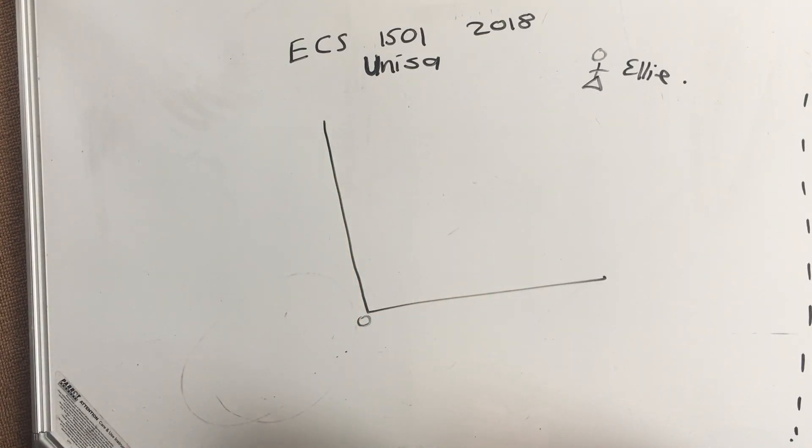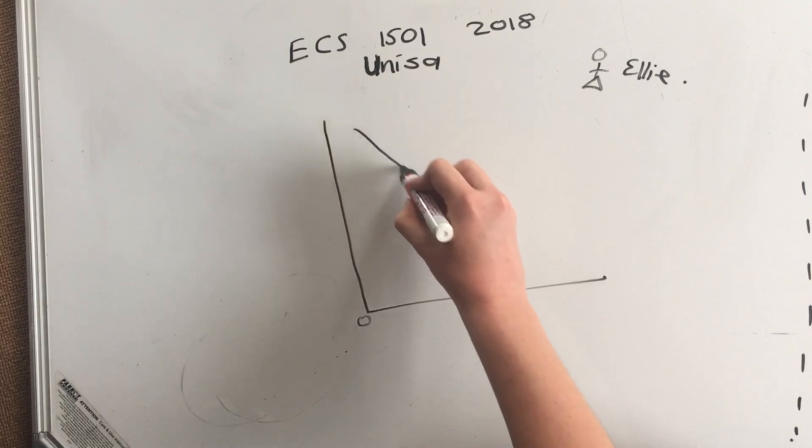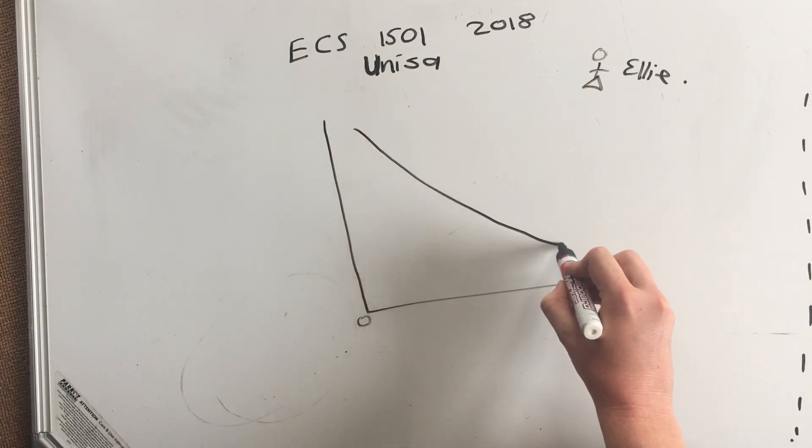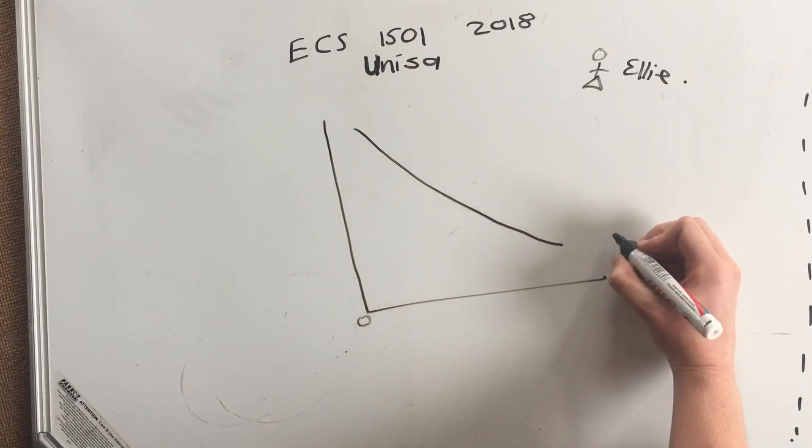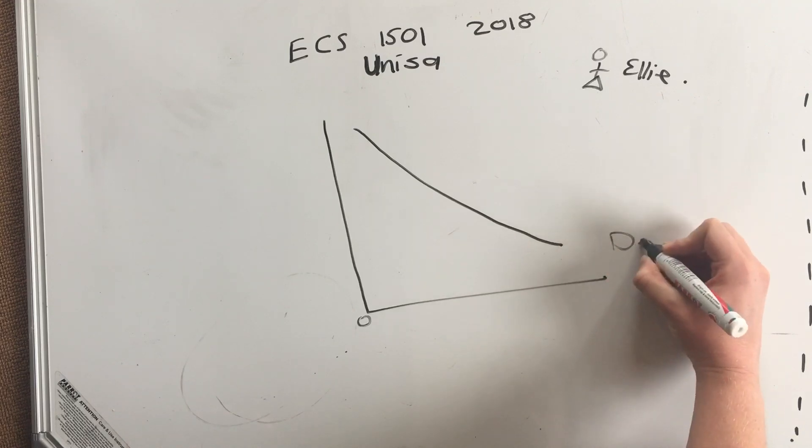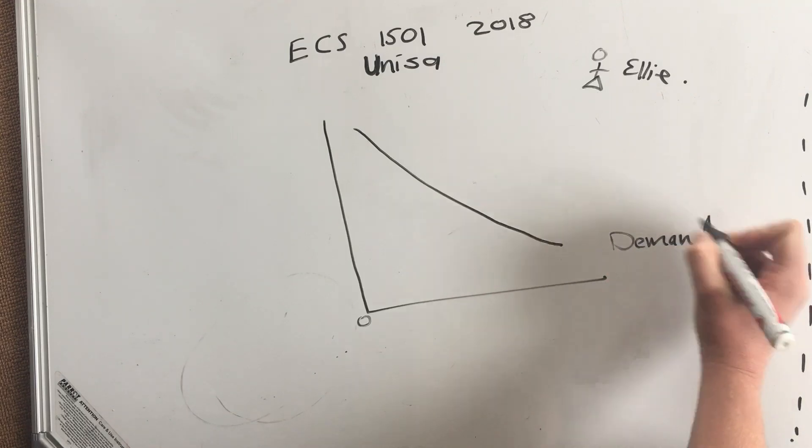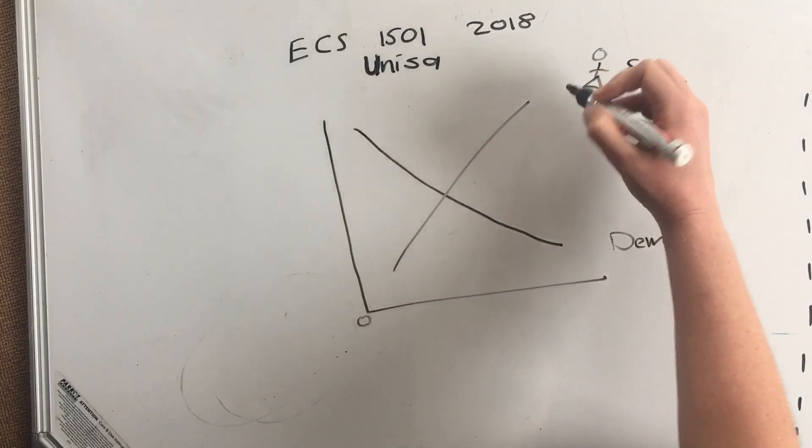Now a big thing in economics is supply and demand. This one is demand, and this one is supply.